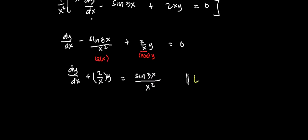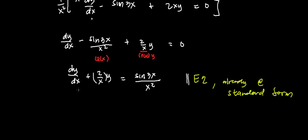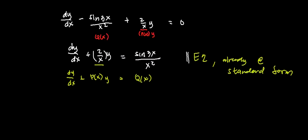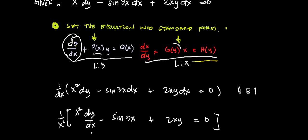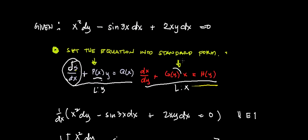Let me call this equation 2. We are already in standard form, which is dy over dx plus p(x) times y equals q(x), where p(x) is 2 over x and q(x) is sine 3x over x squared. We have set our given equation into standard form and it is linear in y.